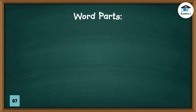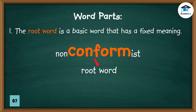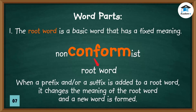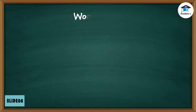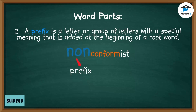The word parts are the prefix, the root word, and the suffix. The root word is a basic word that has a fixed meaning. In our example, 'conform' is the root word — it means 'go along.' When a prefix and/or a suffix is added to a root word, it changes the meaning of the root word and a new word is formed. A prefix is a letter or group of letters with a special meaning that is added at the beginning of a root word. In our example, 'non' is the prefix — it means 'not.'